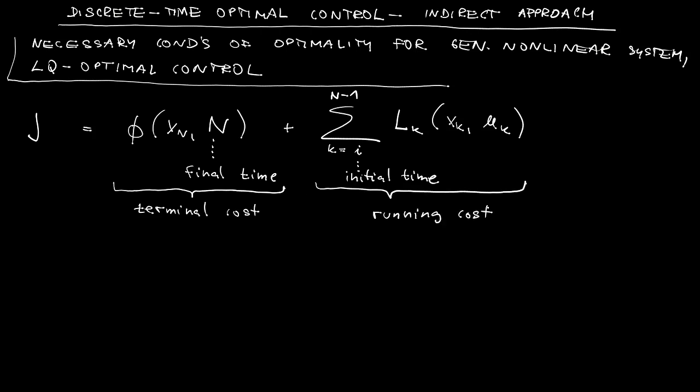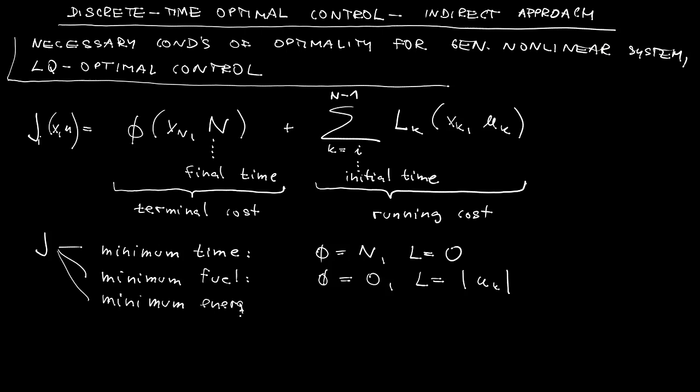Note that since the initial time here is labeled as I, we will include this in the name of the cost function. Now, depending on how we choose phi and L, we obtain different cost functions. For instance, minimum time, minimum fuel, minimum energy.